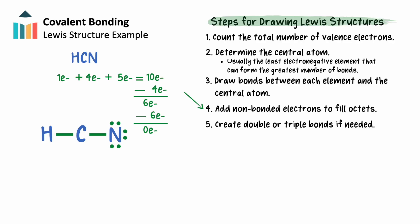Carbon has fallen short of its octet with only four valence electrons from its two bonds. This means we'll need to create multiple bonds with carbon, as we're out of unused valence electrons. We'll start by taking one unbonded pair of electrons from nitrogen and sharing it with carbon, giving carbon now six valence electrons from its three bonds — unfortunately still short of its octet. We'll need to share one more pair of nitrogen's unbonded electrons to create a triple bond. With this triple bond, carbon will have a full octet with eight valence electrons coming from four bonds. Nitrogen keeps its octet with eight valence electrons coming from its three bonds with carbon and two unbonded electrons. Our Lewis structure is complete.